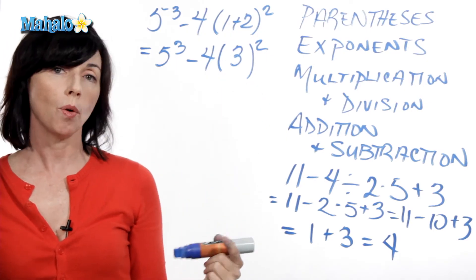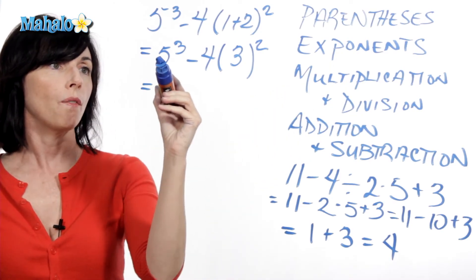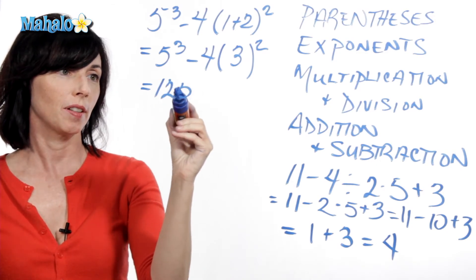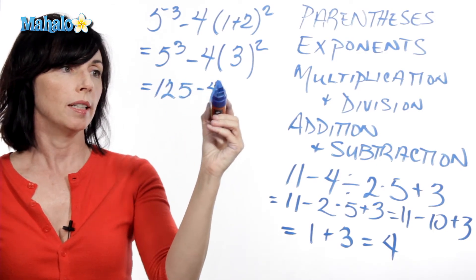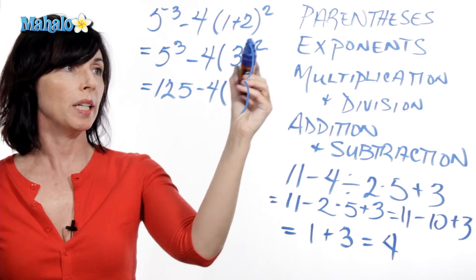Okay, so now we can go on to the next thing, which is exponents. So 5 cubed is 5 times 5 times 5, which is 125. Minus 4 times, I'm still going to leave my multiplication alone. 3 squared is 9.